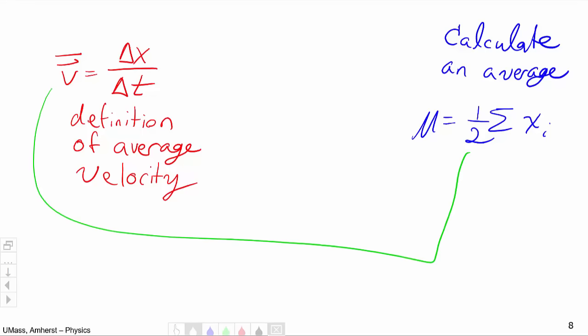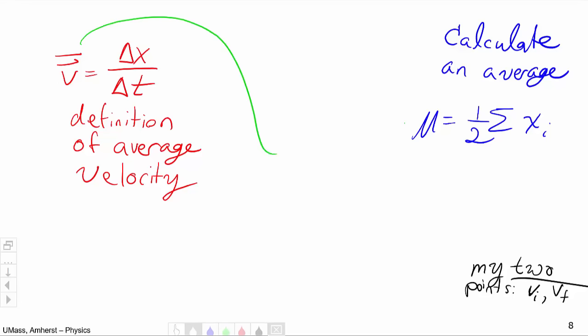What are my two points? The initial speed and the final speed and I've got two of them. So bringing all of these ideas together, average velocity and average and two points, I get that the average speed is going to be VI plus VF over two.